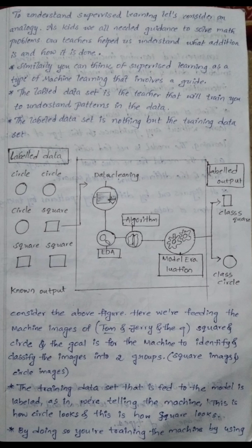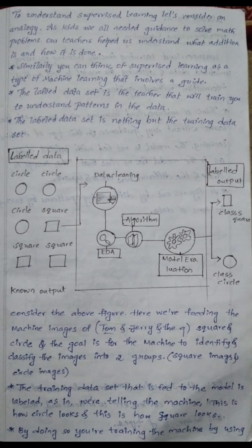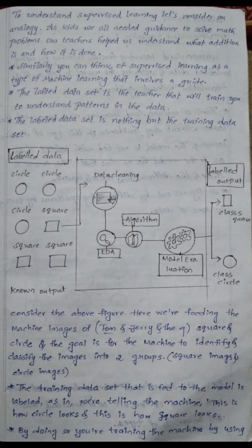For example, consider shapes: circles and squares. The process involves data cleaning, implementing the algorithm, and model evaluation to classify whether a shape is a square or a circle. We feed the machine images of squares and circles. The goal is to identify and classify images into two groups. The training data set is fed to the model, telling the machine 'this is how circles look and this is how squares look.' The machine learns that circles are round with no corners, while squares have edges and corners.